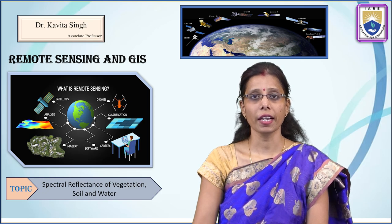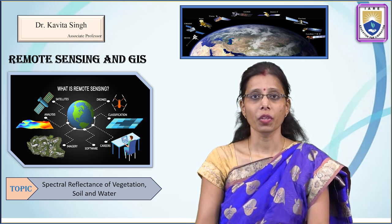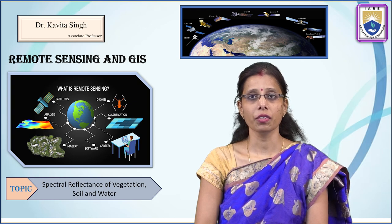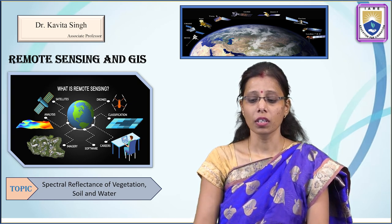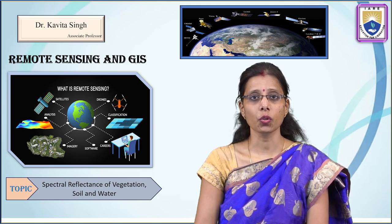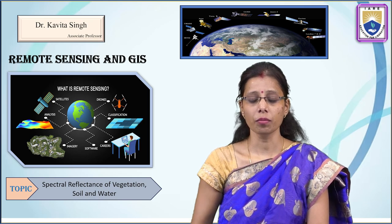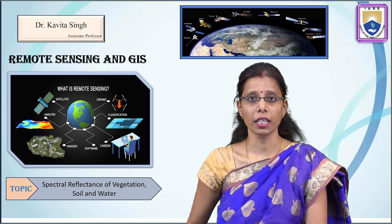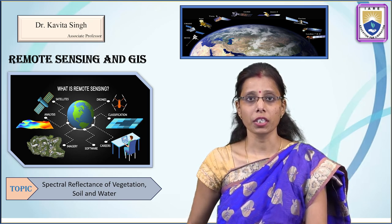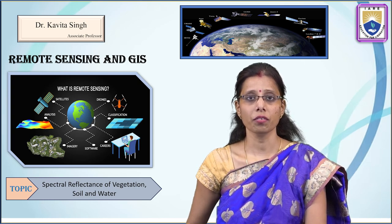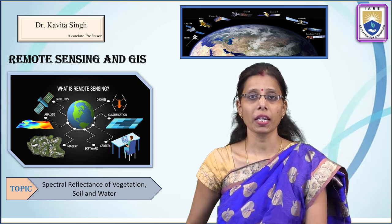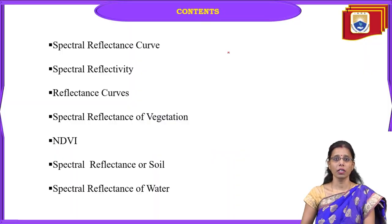When the energy interacts with the earth surface feature, we have different kinds of features present on the earth surface like vegetation, soil, and water. When it interacts with vegetation, soil, and water, how do these features react with the electromagnetic energy — this we will discuss today.